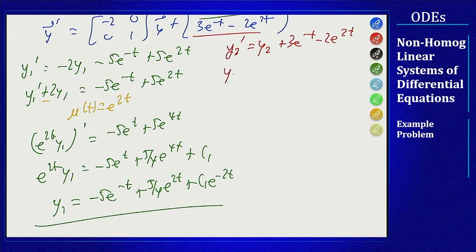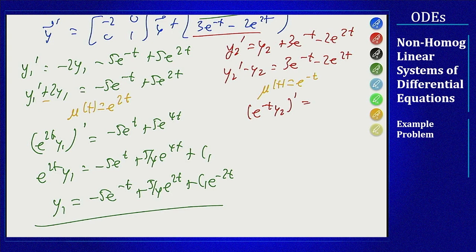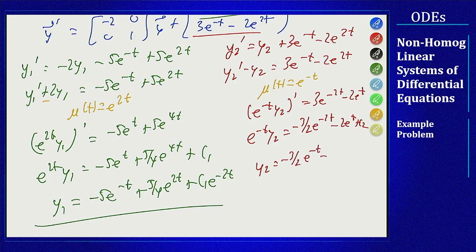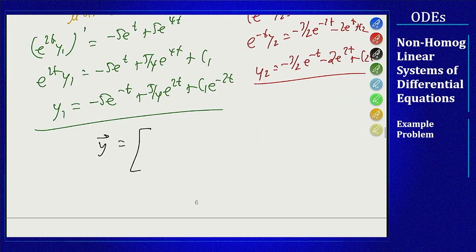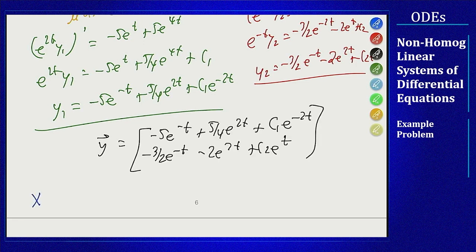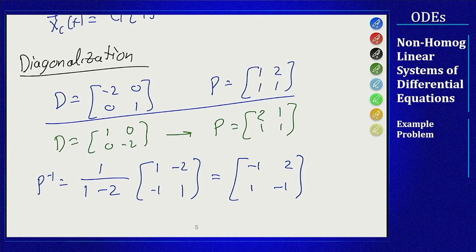For y₂: y₂' - y₂ = 3e^(-t) - 2e^(2t). Using integrating factor e^(-t), we get d/dt[e^(-t)y₂] = 3e^(-2t) - 2e^t. Integrating: e^(-t)y₂ = -(3/2)e^(-2t) - 2e^t + c₂. So y₂ = -(3/2)e^(-t) - 2e^(2t) + c₂e^t. Now I stack these into the y vector and compute x = Py, where P = [1, 2; 1, 1].